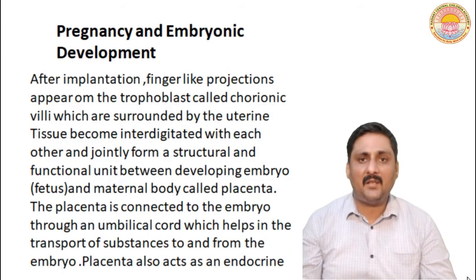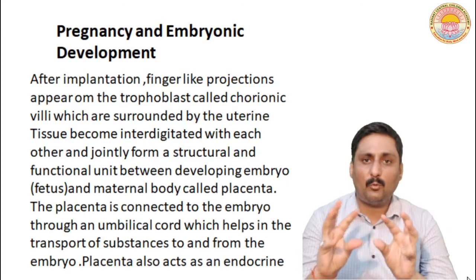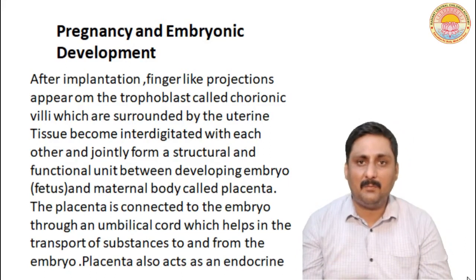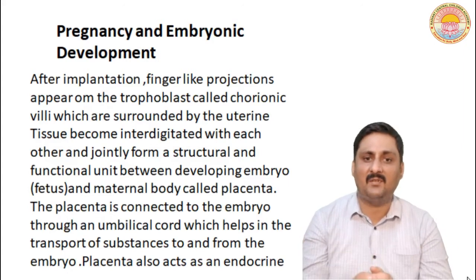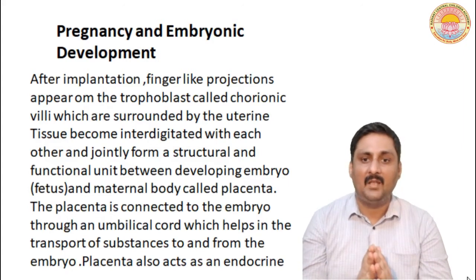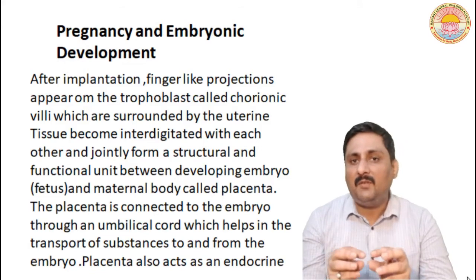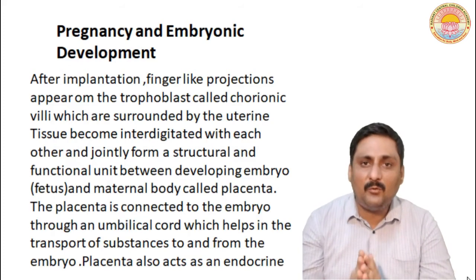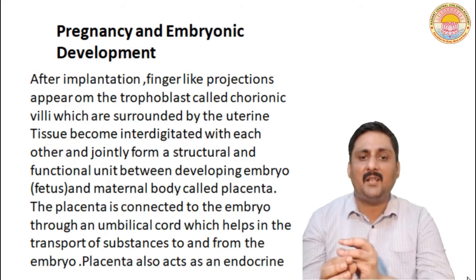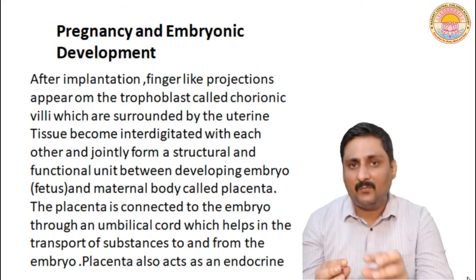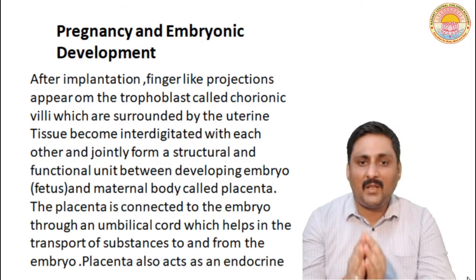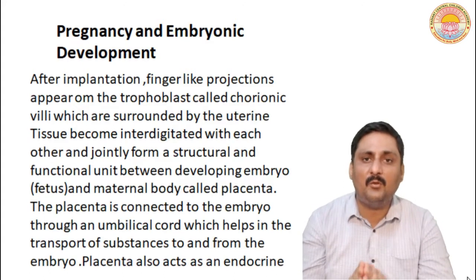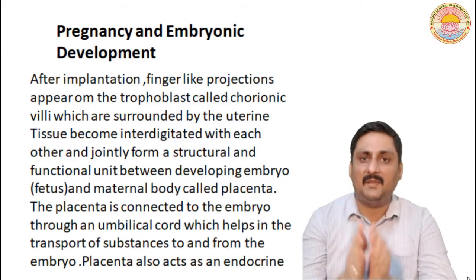After the implantation process has taken place, the trophoblast layer, which is the outermost layer of the blastocyst, develops finger-like projections which are called chorionic villi. Chorionic villi are surrounded by uterine tissues, and together with the uterine tissues, this gets integrated with the chorionic tissue and they jointly form a structural and functional unit which is called placenta.